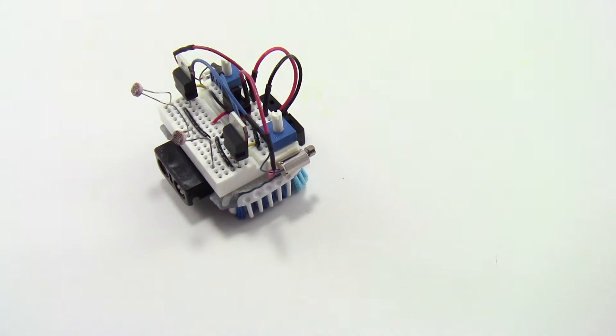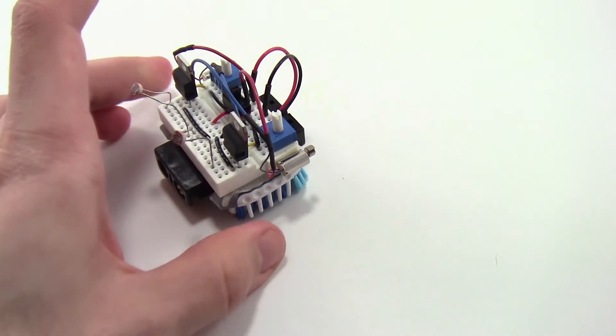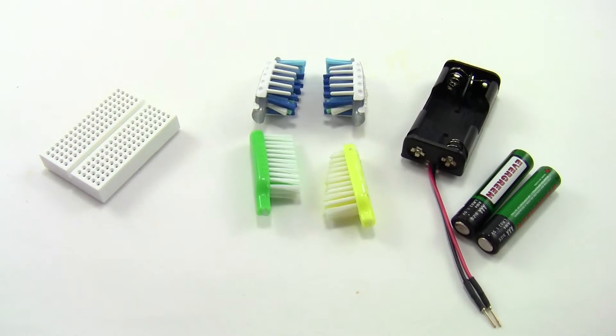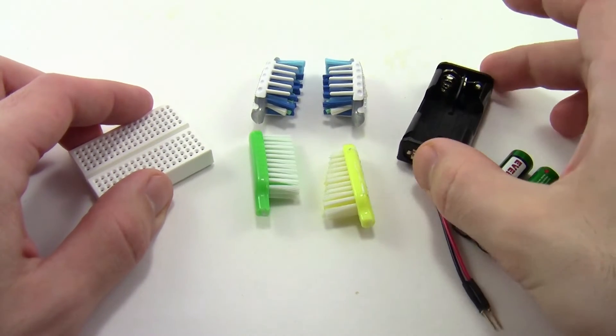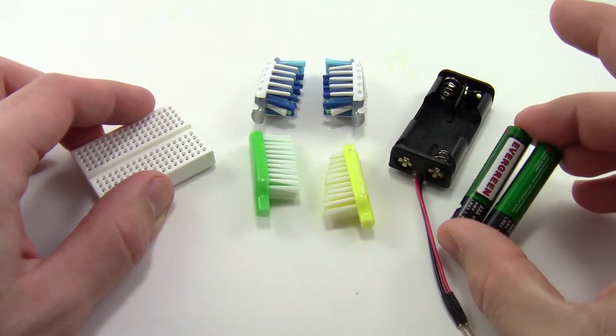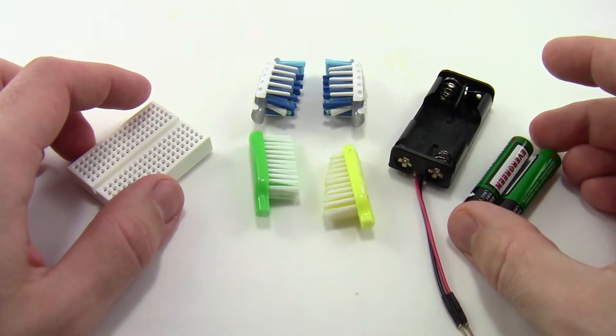This video will show you how to build these robots using a Science Buddies kit of parts. The first thing you will do is assemble the body of the robot. To do that, you will need the breadboard, the battery pack, and the two AAA batteries, which are all included in your bristlebot kit.